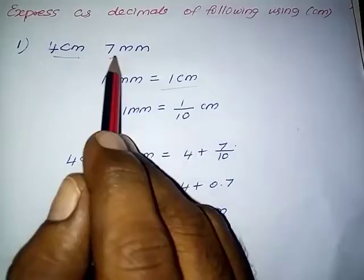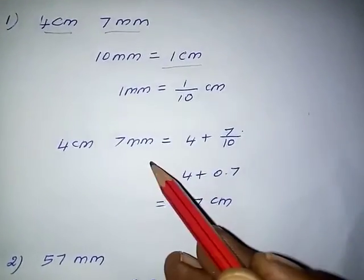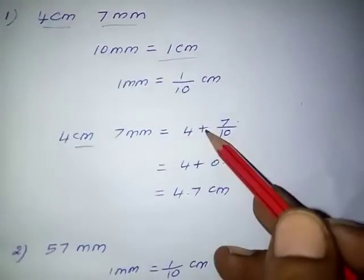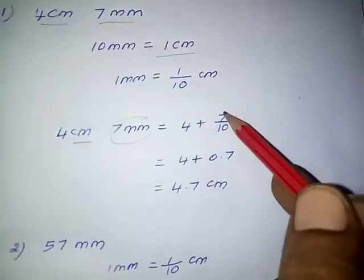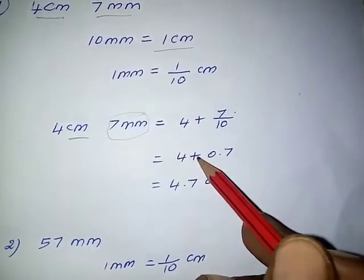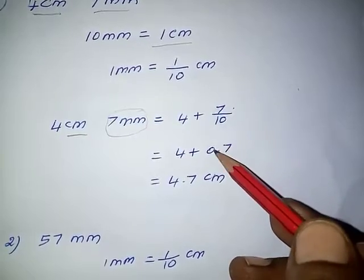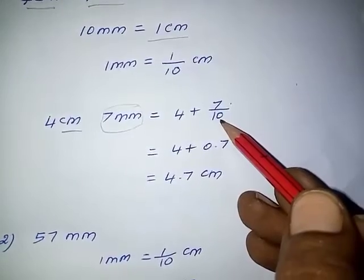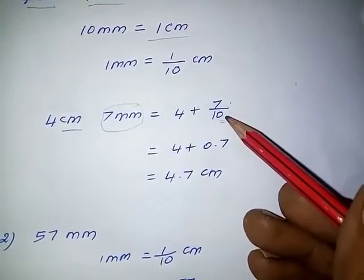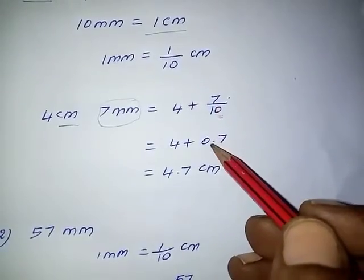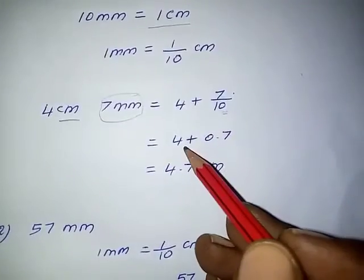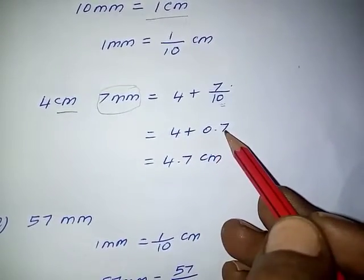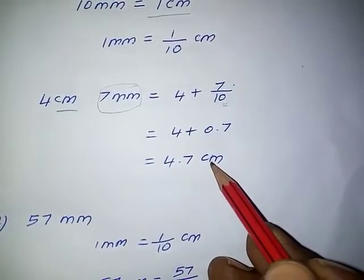So the given question: 4 centimeter is the integral part and 7 millimeter is the decimal part. We have to write the integral part as it is, so 4 plus this decimal part can be written as 7 by 10. According to the place value, 7 by 10 equals 0.7. Now join integral part plus decimal part: 4 plus 0.7 equals 4.7 centimeter.